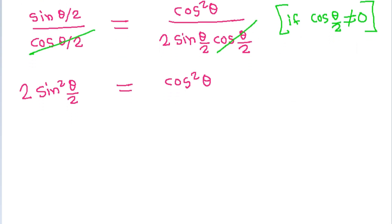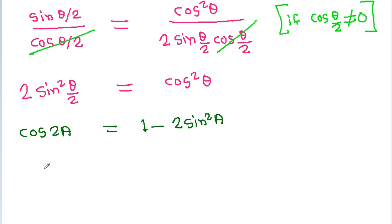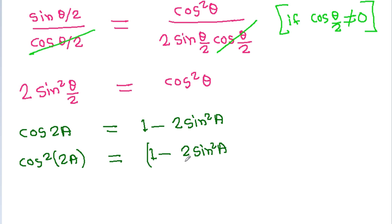We know that cos(2a) is equal to 1 minus 2·sin²(a). Applying this, cos(θ/2) in terms of sin²(θ/2): we substitute so that sin²(θ/2) relates to cos²θ.